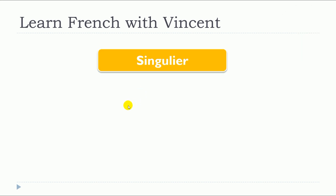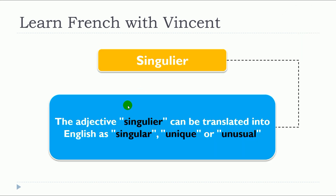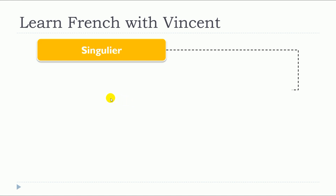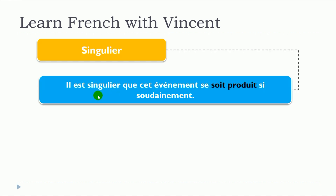This lesson is about 'singulier'. The adjective 'singulier' can be translated into English as 'singular', 'unique', or 'unusual'. We will now see some examples with 'singulier'.